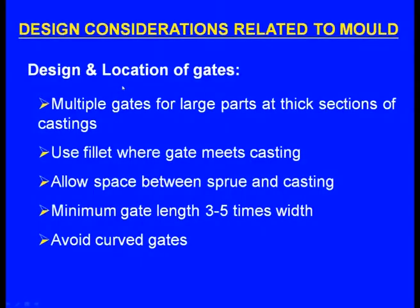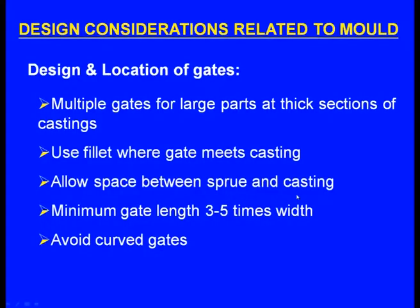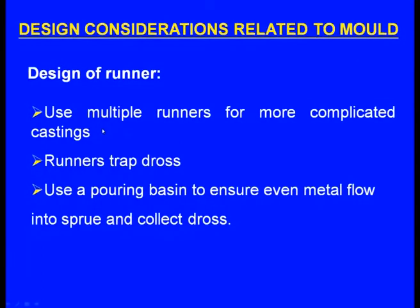For design and location of gates: multiple gates should be incorporated for larger parts at thick sections of the castings. Use a fillet where the gate meets the casting. Keep low space between sprue and casting. The minimum gate length should be 3 to 5 times the width. Use wide, corrugated gates.